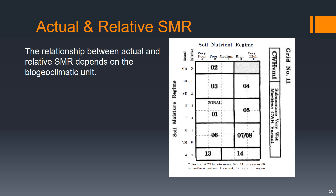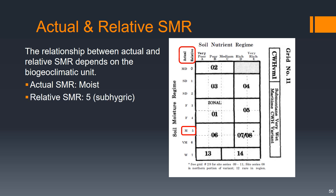As mentioned earlier, the relationship between the actual and relative SMR depends on the biogeoclimatic unit. So in this case, we figured that our actual SMR is moist, or M. For this biogeoclimatic unit, an actual soil moisture regime of moist corresponds to a relative soil moisture regime of 5, or subhygric.